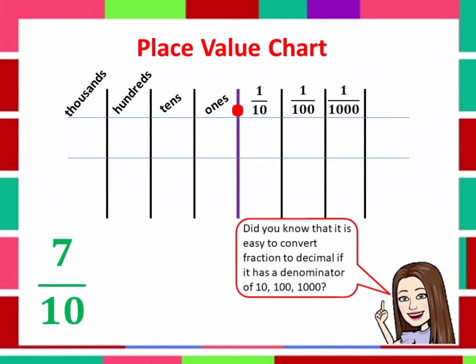For example, 7 over 10. If we write it in the place value chart, it will be 0.7 because 7 is found in the 10th place. Therefore, 7 over 10 is equal to 0.7. Easy, right?